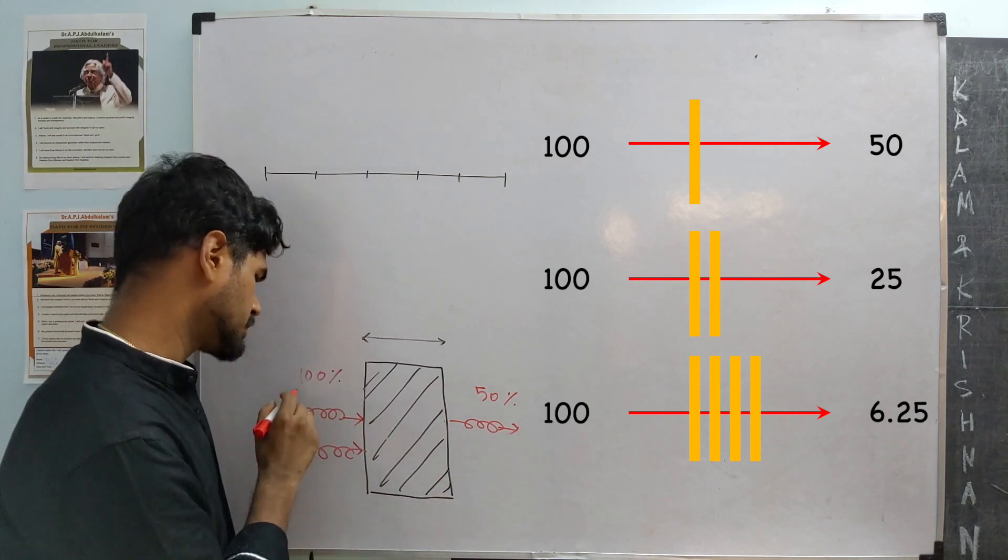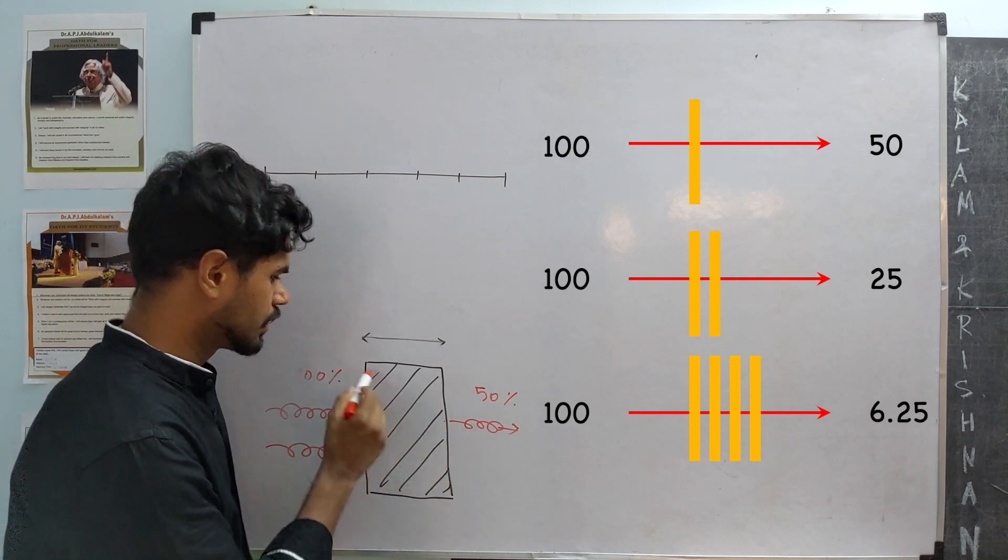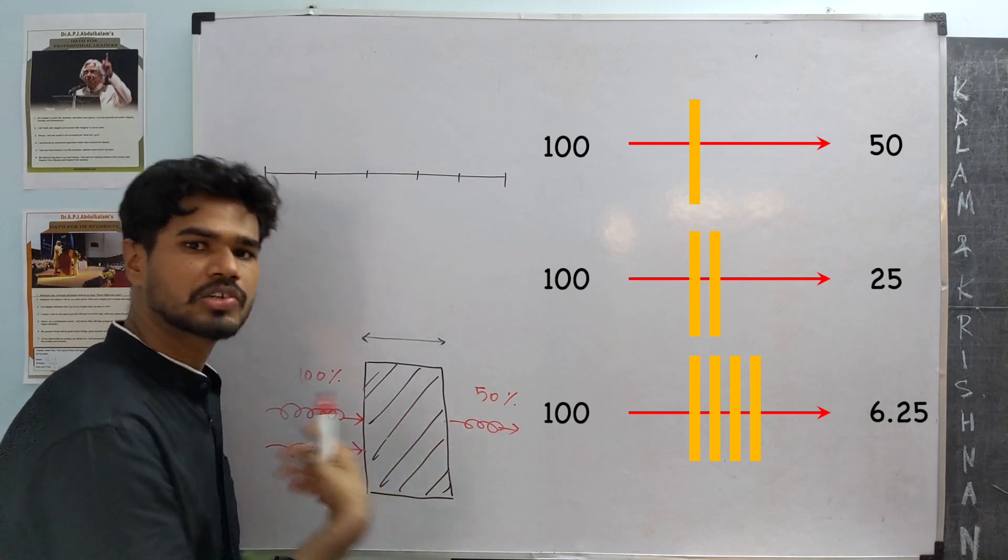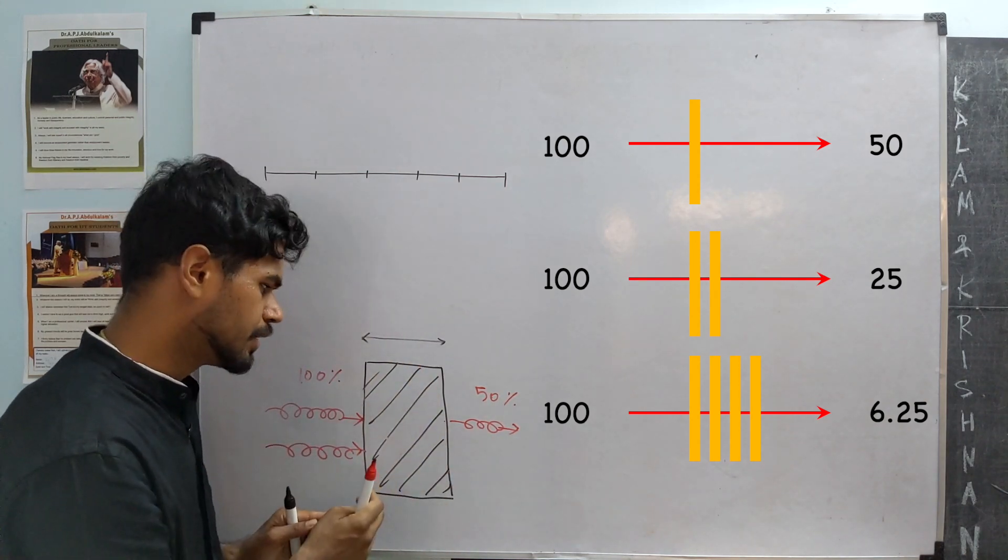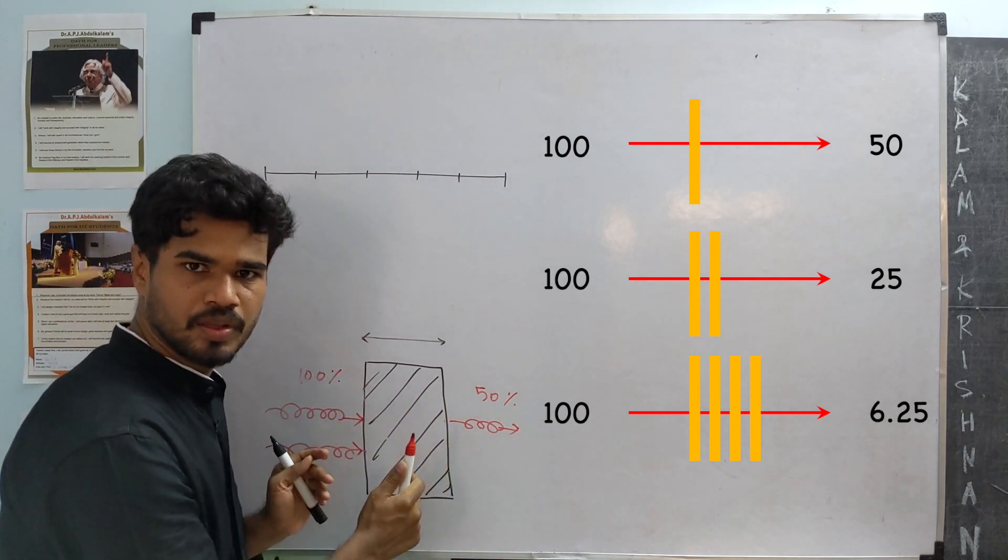Now, if 100% of photons enter this side, this attenuation depends on how thick this block is. It also depends on the material of the block. Let's fix the material. Let's take it to be sodium iodide. The amount of attenuation depends on how thick this block is.